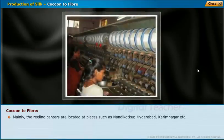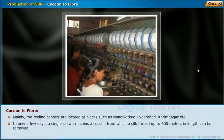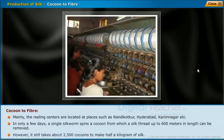The main reeling centers are located at places such as Nandikatkur, Hyderabad, and Karimnagar. A single silkworm spins a cocoon from which a silk thread up to 600 meters in length can be removed. However, it still takes about 2,500 cocoons to make half a kilogram of silk.